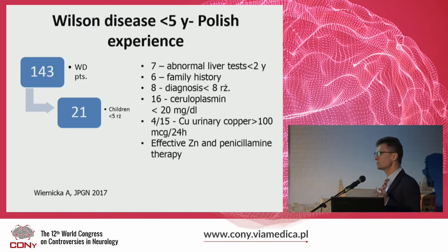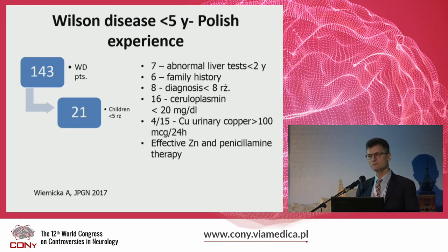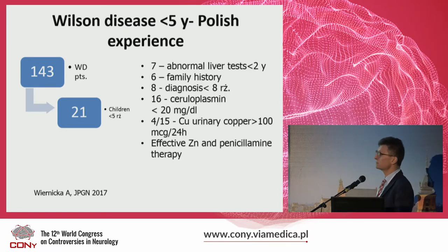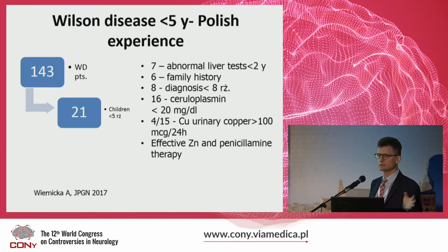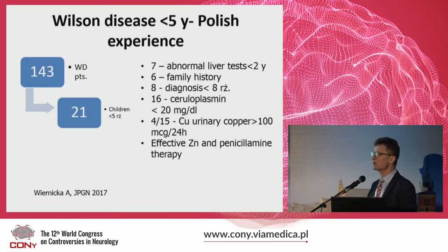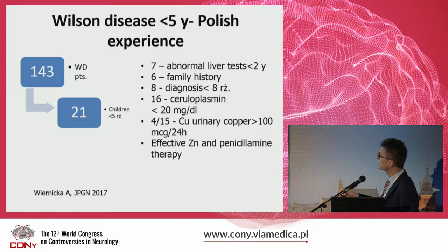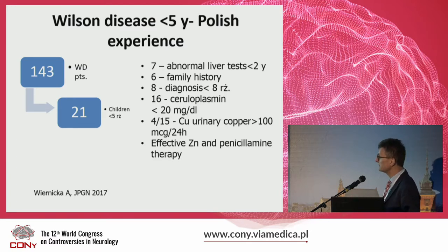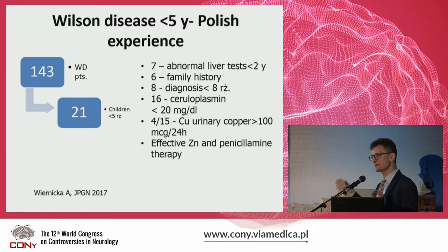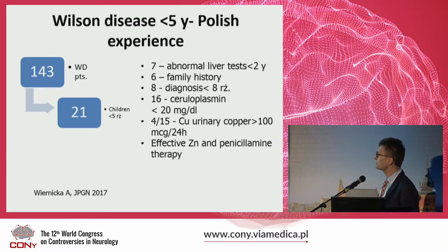Another question appearing in pediatric age is whether you can test for Wilson disease at an early age, what is the value of the tests, what is the effect of therapy, and when to start therapy. There are only case reports from different centers; we were able to collect 21 patients with liver presentation below 5 years of age — a really large cohort for this age group. Seven had abnormal liver tests below 2 years, 6 had a family history, 8 had the final diagnosis below 8 years, 16 had ceruloplasmin below 20, and only 4 had urinary copper above 100 — so the test was not very sensitive in this group. They responded very well to zinc or penicillamine therapy.